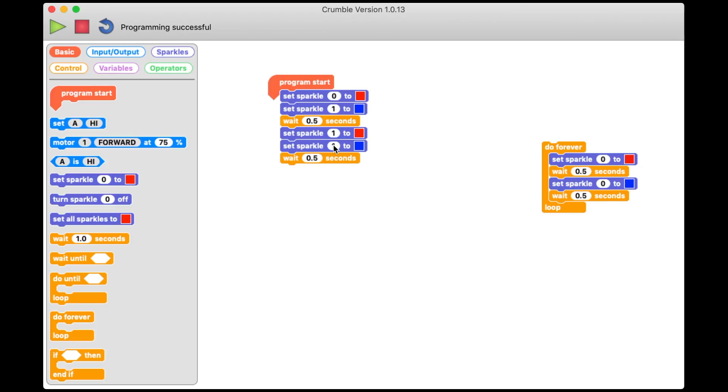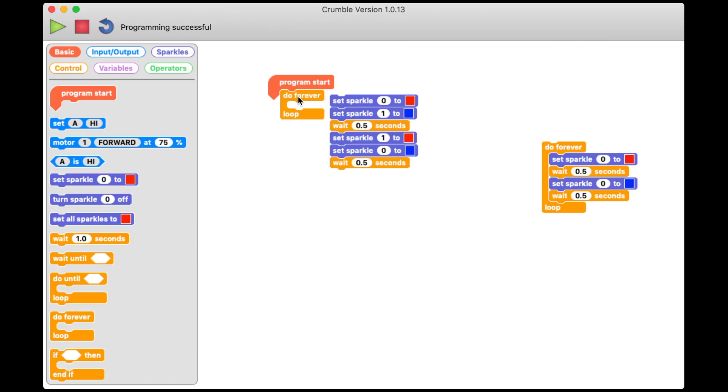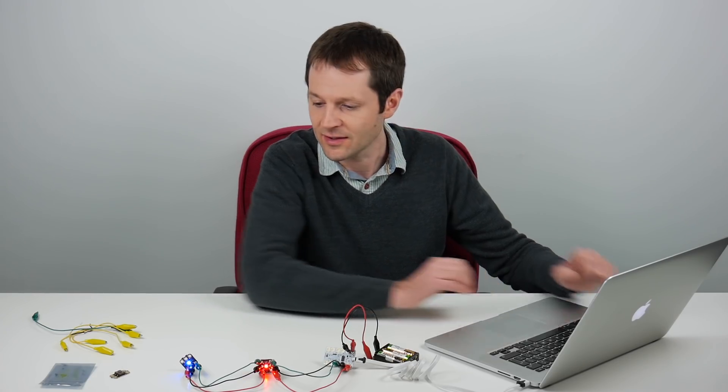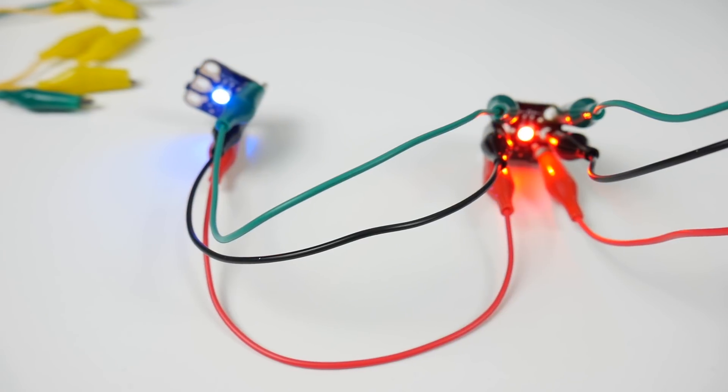And then put all of that inside a loop. So this is almost the same program we had at the beginning, but I've added in the extra sparkle one commands. And then we'll send that to the crumble. And there we have our alternating lights.